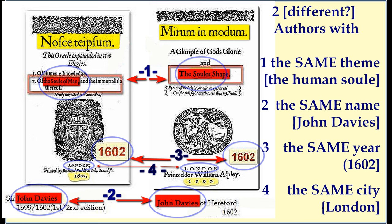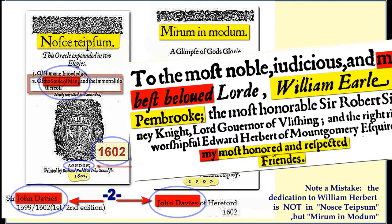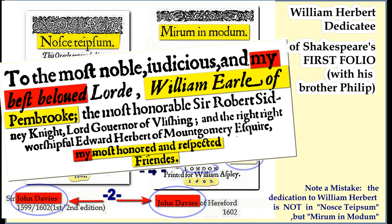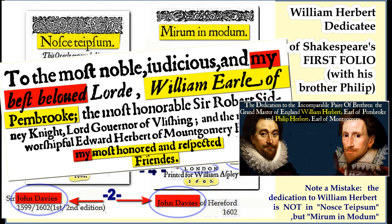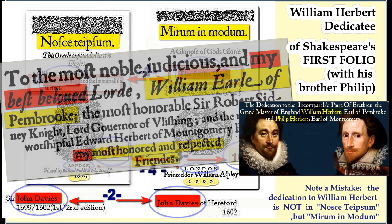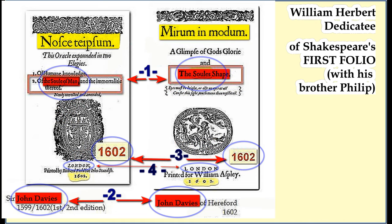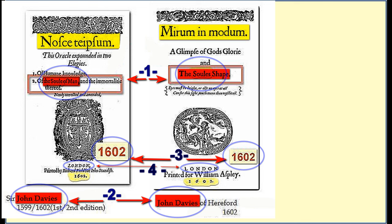It's like they're both wrestling with the same big ideas, just expressing them in different ways. But it gets even more interesting — Nosce Teipsum includes a dedication to a guy named William Herbert, the Earl of Pembroke. He was a powerful nobleman who supported a lot of artists, possibly even Shakespeare himself. So the fact that both John Davis and Shakespeare had this connection to William Herbert is pretty intriguing — it's like a thread connecting these two figures who might be more intertwined than we initially thought.